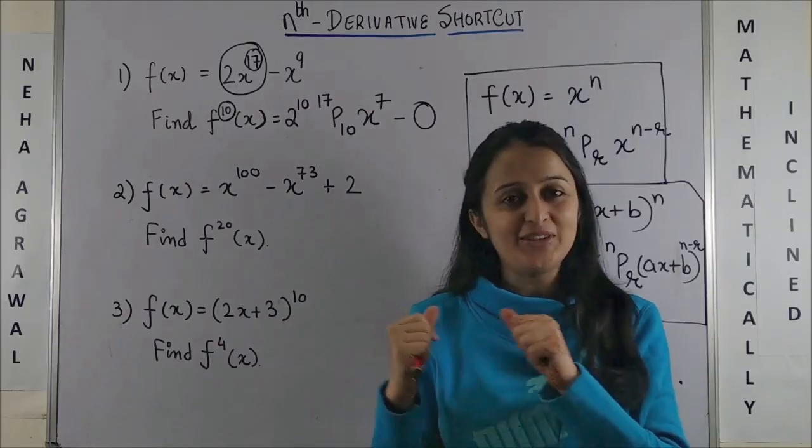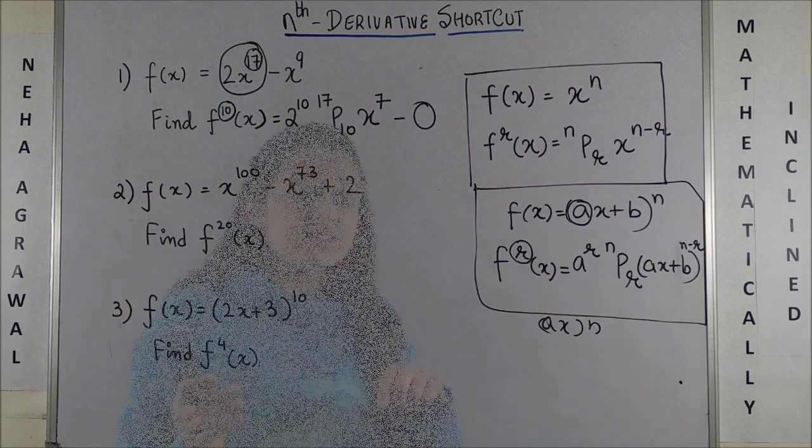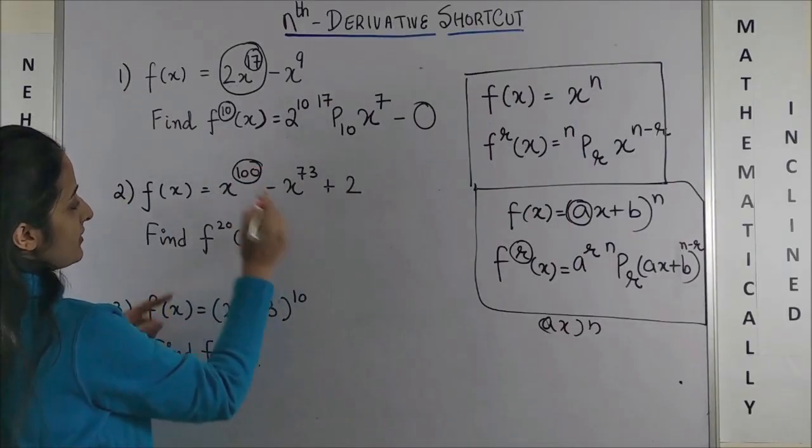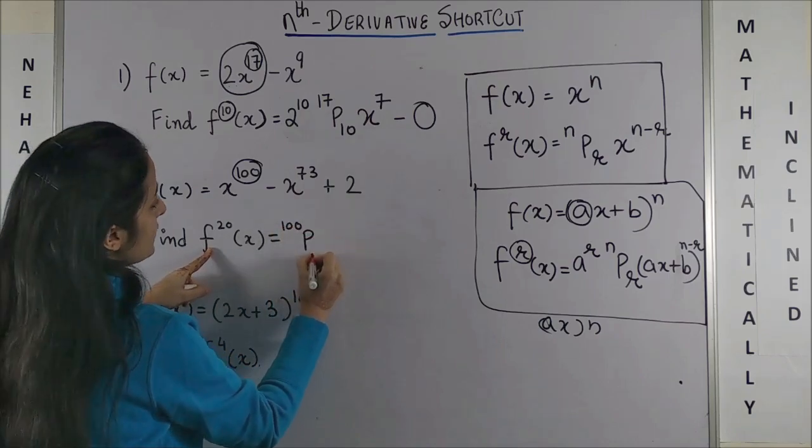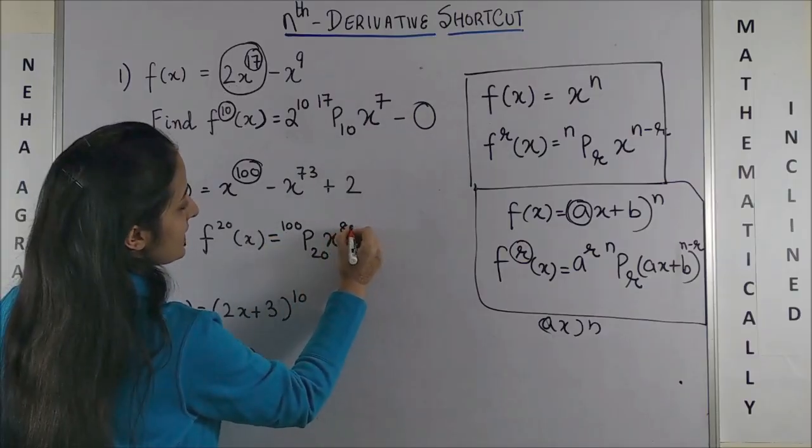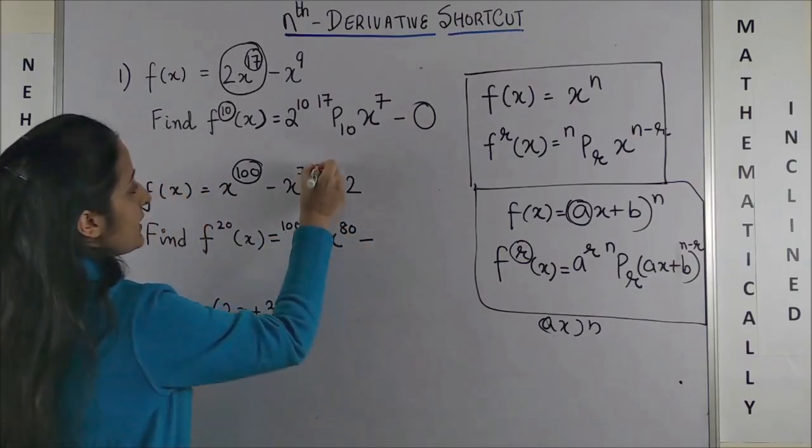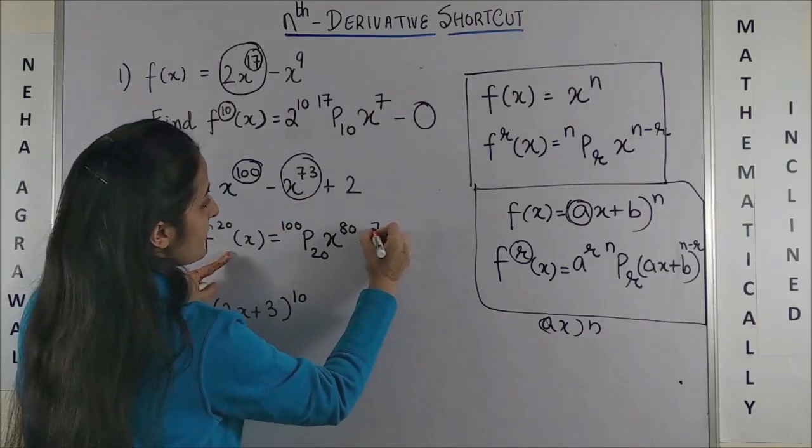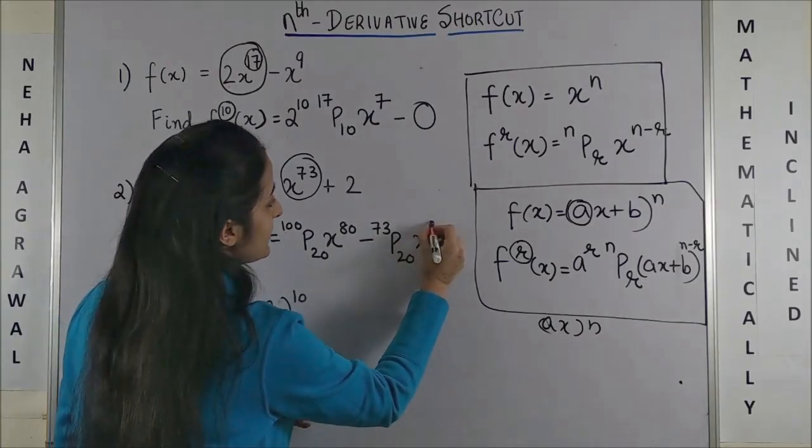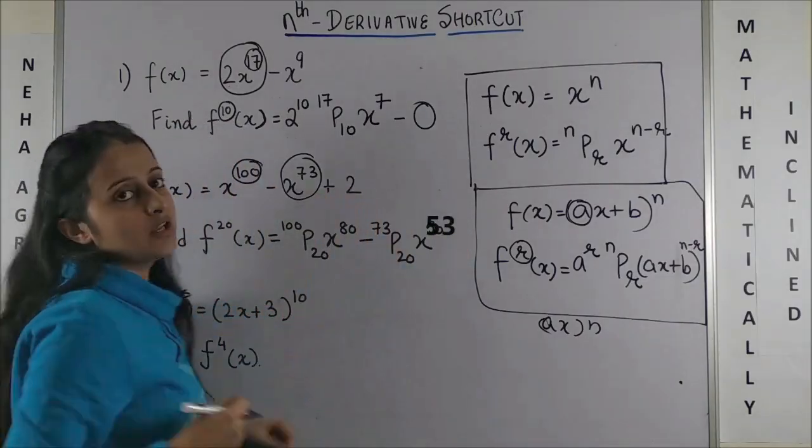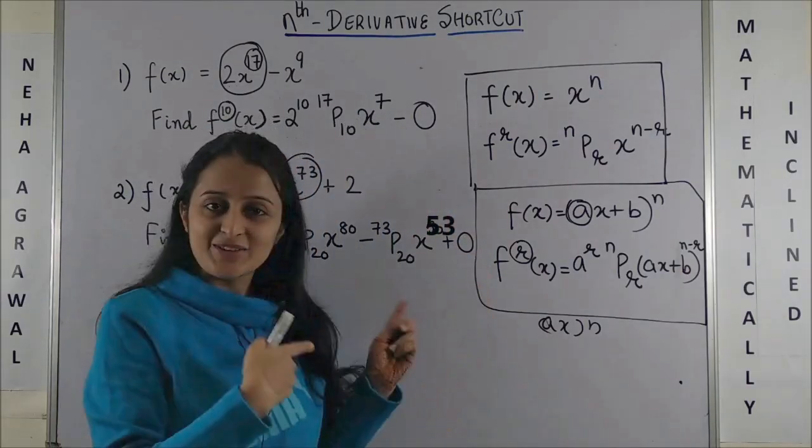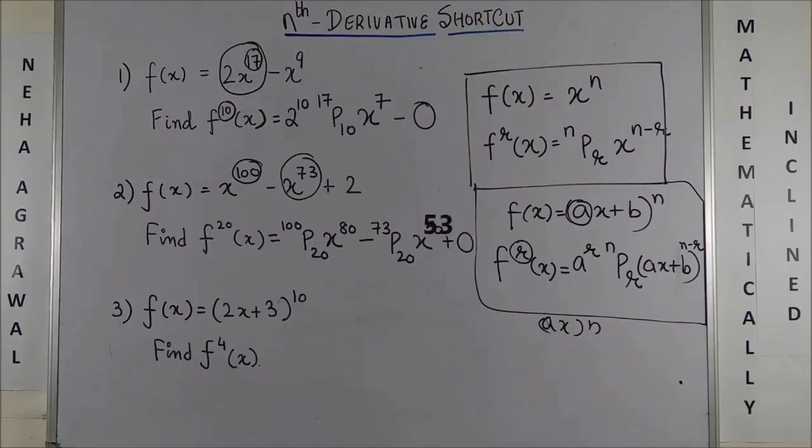Same way, looking at question 2. We have x raised to power 100, so it's simply 100P20 and then you have x raised to power 100 minus 20, that's 80. Minus, if you have to do x raised to power 73, again 73P20, x raised to power 73 minus 20, that's 53. And 2 in any derivative would always be zero. So that's your answer.